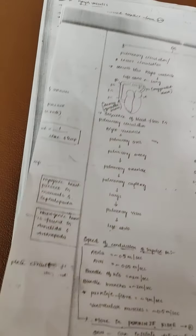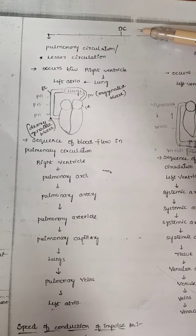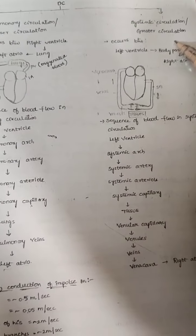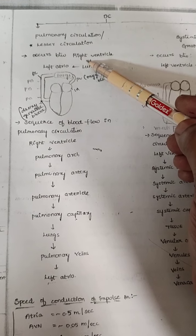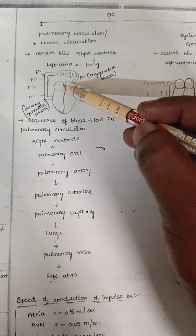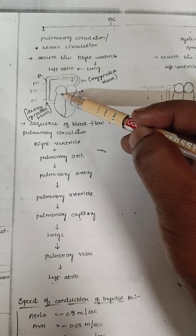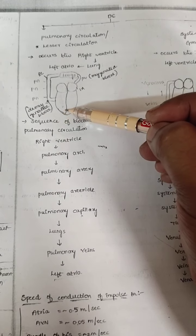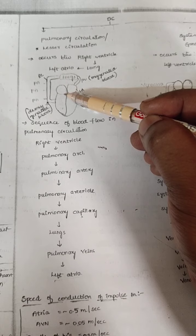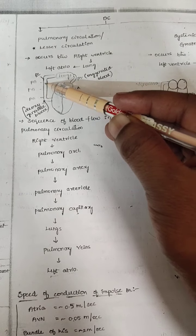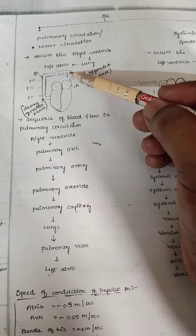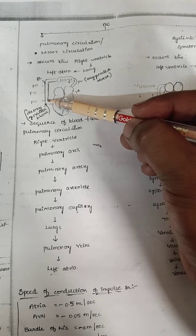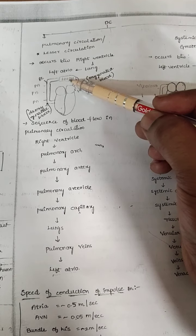Our circulation is a double circulation. Double circulation means two types of circulation: one is pulmonary circulation and the other is systemic circulation. In pulmonary circulation, blood enters from the right atria to the right ventricle via the pulmonary artery. The right side always carries deoxygenated blood. This deoxygenated blood enters the pulmonary artery, goes to the lungs where it is oxygenated, and the oxygenated blood enters from the pulmonary vein to the left atria. This is called pulmonary circulation because it is connected with the lungs.